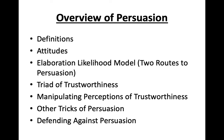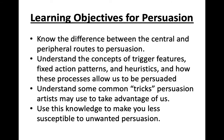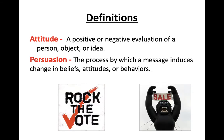Persuasion is one of the most studied of all social psychological phenomena. It's the process by which messages cause us to change our beliefs, our attitudes, or our behaviors. I'm going to go over some definitions, talk about a prominent model of persuasion, go over trustworthiness and manipulating perceptions of trustworthiness, discuss some tricks of persuasion, and then how to defend ourselves against persuasion. After this part of the lecture, I hope you'll know the difference between the central and peripheral routes of persuasion, understand trigger features and fixed action patterns, and understand some common tricks that persuasion artists use. An attitude is a positive or negative evaluation of a person, object, or idea, and persuasion is the process by which a message induces change in beliefs, attitudes, or behaviors.